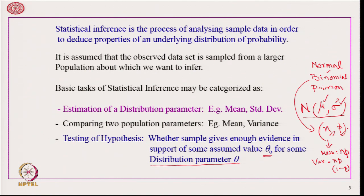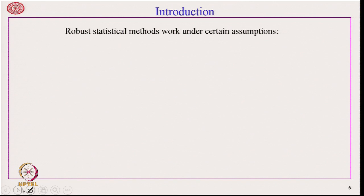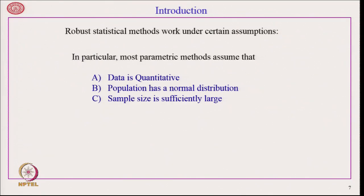Robust statistical methods work under certain assumptions. By robust, we mean the statistical methods that many of you know — namely Z test, T test, chi-square test, F test, etc. These are some robust statistical methods, but there are certain assumptions for them. In particular, most parametric methods assume that the data is quantitative. If the data is not quantitative, the statistical methods that we know will not work. Another assumption is that the population has a normal distribution — it is centered around the mean and is more or less symmetrically spread. And the sample size must be sufficiently large.